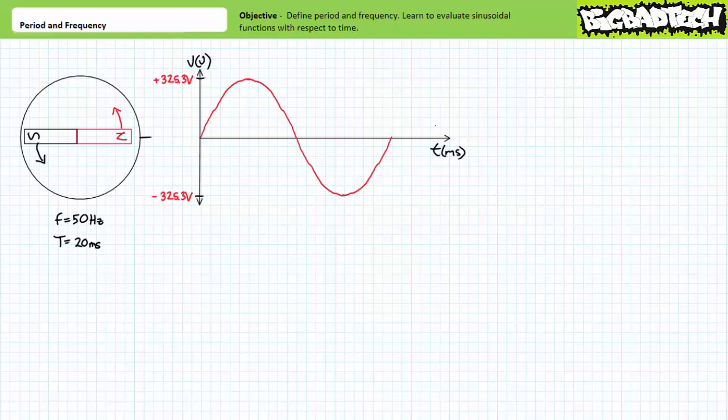What all these differing quantities — rotational speed, frequency, and period — are trying to convey is essentially the same thing: it takes time to travel the full 360 degrees of a circle. This means the output voltage, previously a function of angular position of a generator shaft, can also be expressed as a function of time. Consider a generator with a 50 Hertz frequency or 20 millisecond period. Assuming we start at the agreed-upon reference on the far right and travel counterclockwise, it would take 20 milliseconds to travel the full 360 degrees. This is the equivalency we seek: 360 degrees equals 20 milliseconds.